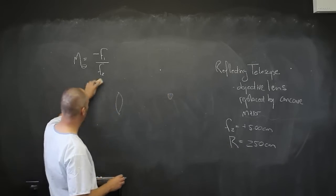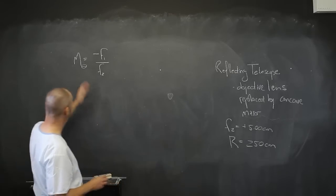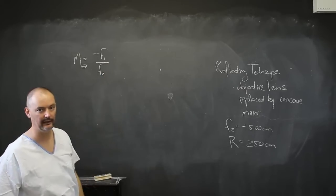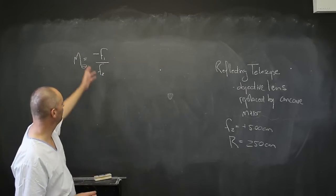There is an equation for the angular magnification: the objective lens, the eyepiece lens, and just the negative in front of them.